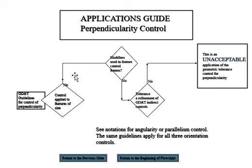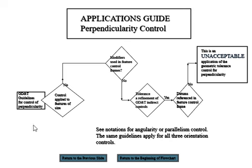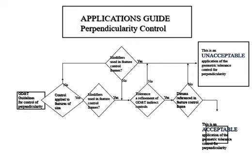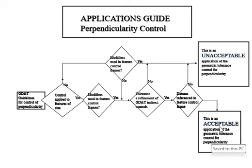You're not applying the control to the feature of size, so then it must be applied to the feature. You look at the modifier — you don't have it. You look at the tolerance — you don't have it. That's unacceptable. If you don't have the datum reference, it's unacceptable because you need a datum plane to control the perpendicularity of that feature. So you have two distinct flow chart paths to make the decision.